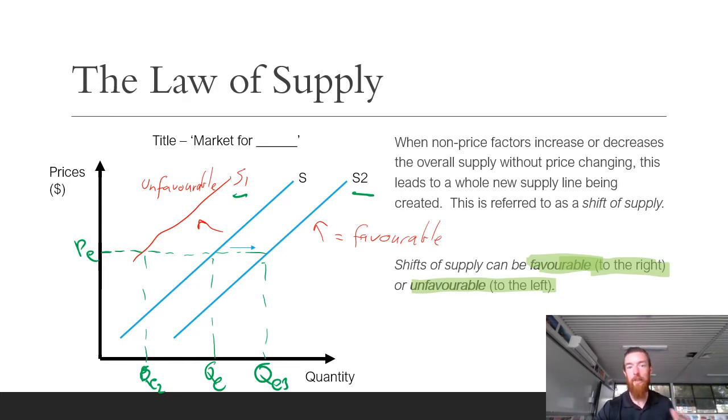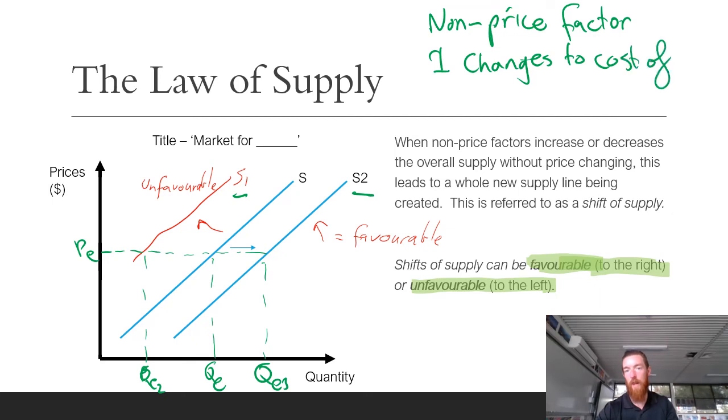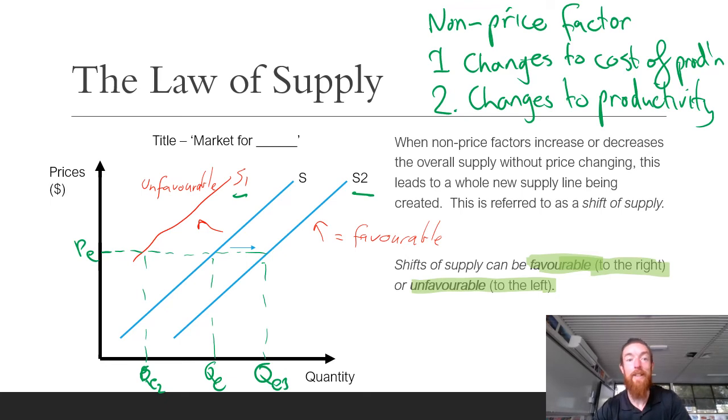So things that cause these non-price factor shifts, so it can be anything, it really boils down to two main things for the law of supply. So the two main non-price factors, even though we're going to look at a whole list, every non-price factor for supply can be linked to one of two things. The first one is anything that changes cost of production. And then the second one is anything that changes a business's efficiency or productivity. Either one of those two things is going to either cause a favorable or unfavorable shift in supply.